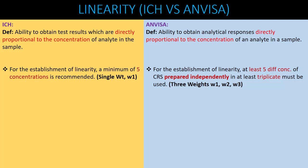This is a significant difference between ICH and ANVISA. ICH talks about only a single stock preparation from which five concentrations are prepared, whereas ANVISA requires preparation of three different stock solutions and making three different linearity solutions at five different concentration levels.